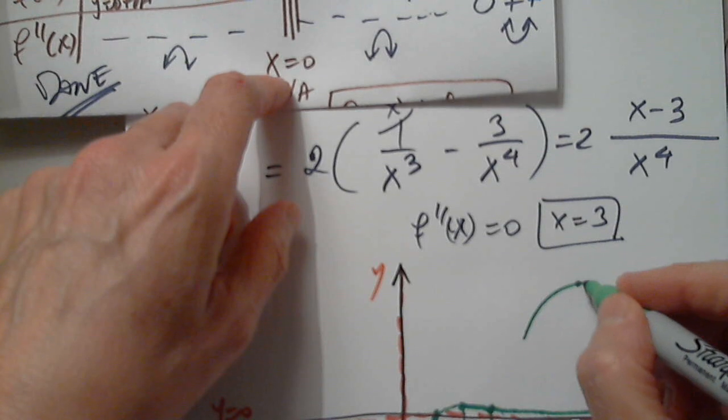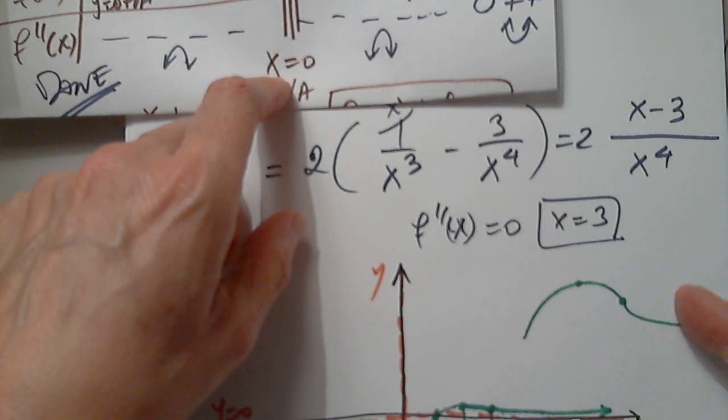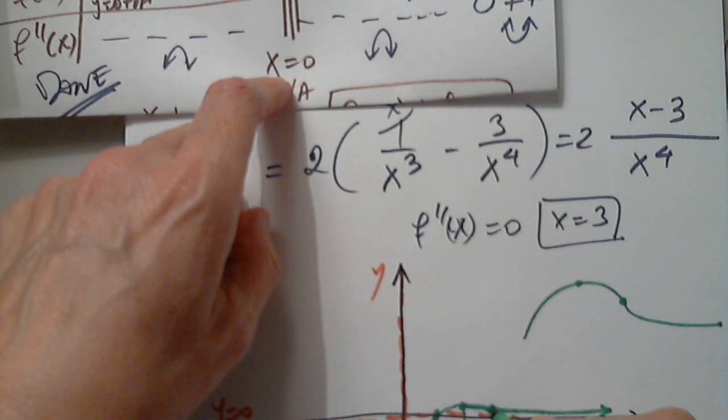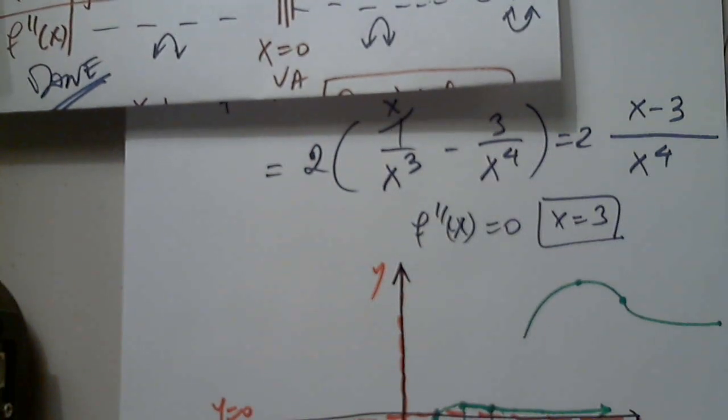So I'm going to graph this a little bit bigger. Maximum. Continues to the inflection point. Changes concavity. So this is a zoomed in area here. Up to a maximum. Decreasing to the inflection point. Changing concavity. Opening up.